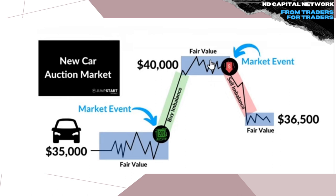Think of a new car being auctioned — a $35,000 car with fair value ranging between $33,000 and $38,000: buyers come in at the low, sellers at the highs. Then a market event creates an imbalance and a new fair value. Here you have more demand than supply creating the imbalance upward, and there more supply than demand creating the imbalance downward. In between, you have fair values — typically range-bound markets. Keep in mind that assets are range-bound approximately 80% of the time.